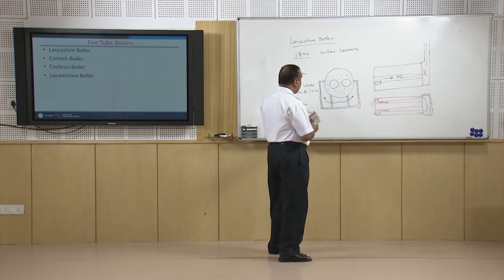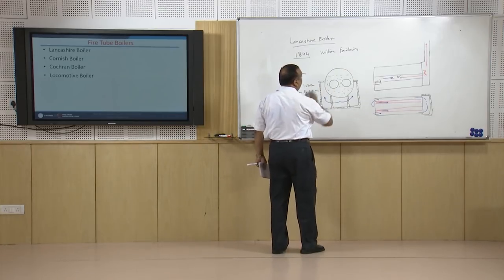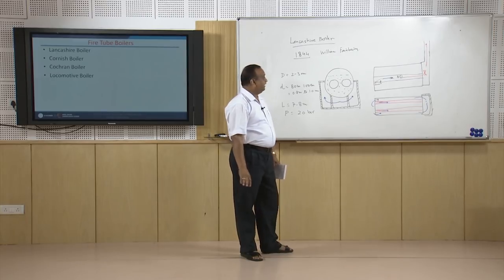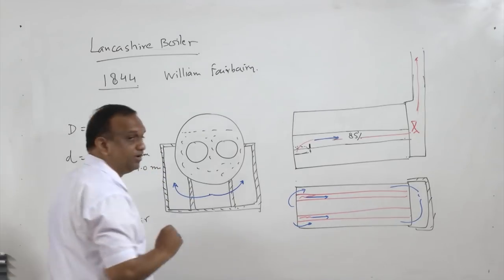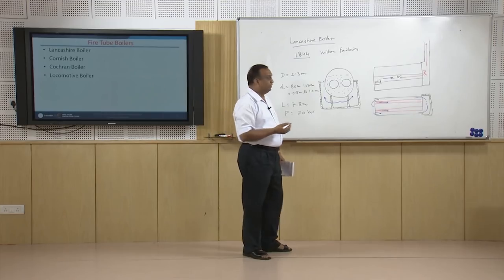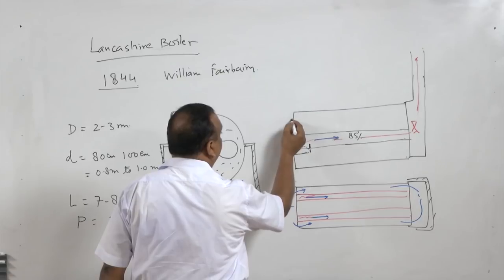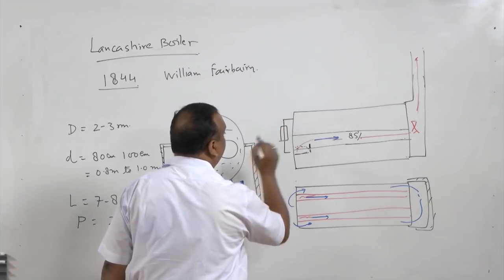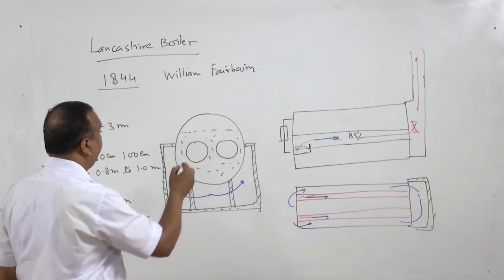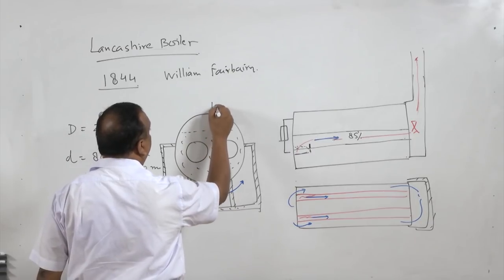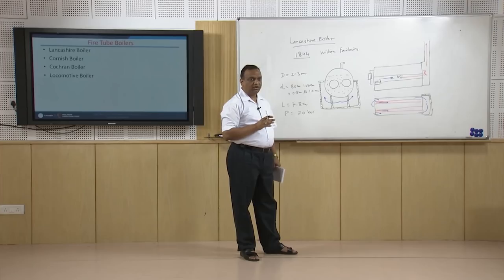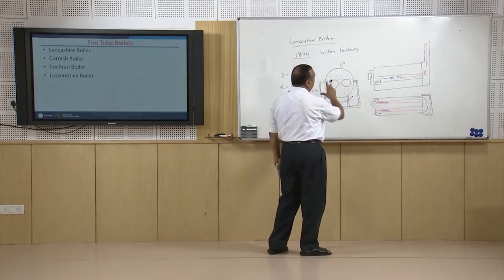In this boiler the steam which is collected here is saturated steam. There are several mountings placed on the boiler. For example, to know the water level in the boiler, a water level indicator is provided. In order to release the steam, a steam stop valve is provided. There are a number of accessories and mountings on the boiler which facilitate the functioning of this boiler.